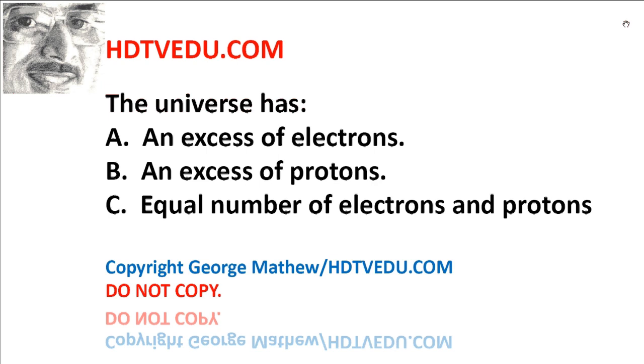The universe has: A) an excess of electrons, B) an excess of protons, or C) equal number of electrons and protons?